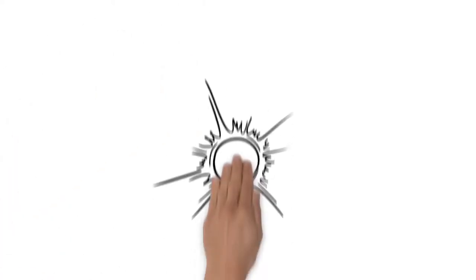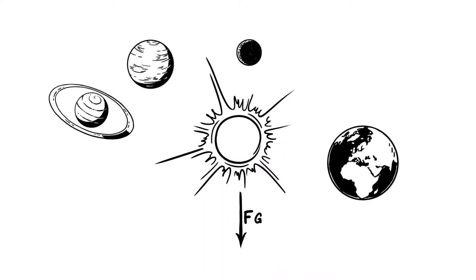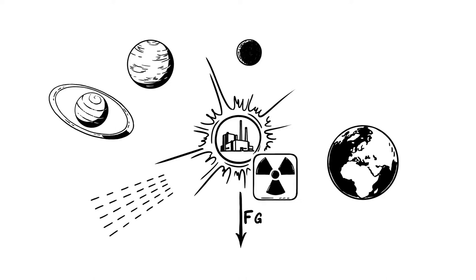But the Sun is not only the gravitational center of our solar system, it is also a source of energy. Fueled by nuclear fusion, the Sun emits light and a steady stream of particles, the solar wind.